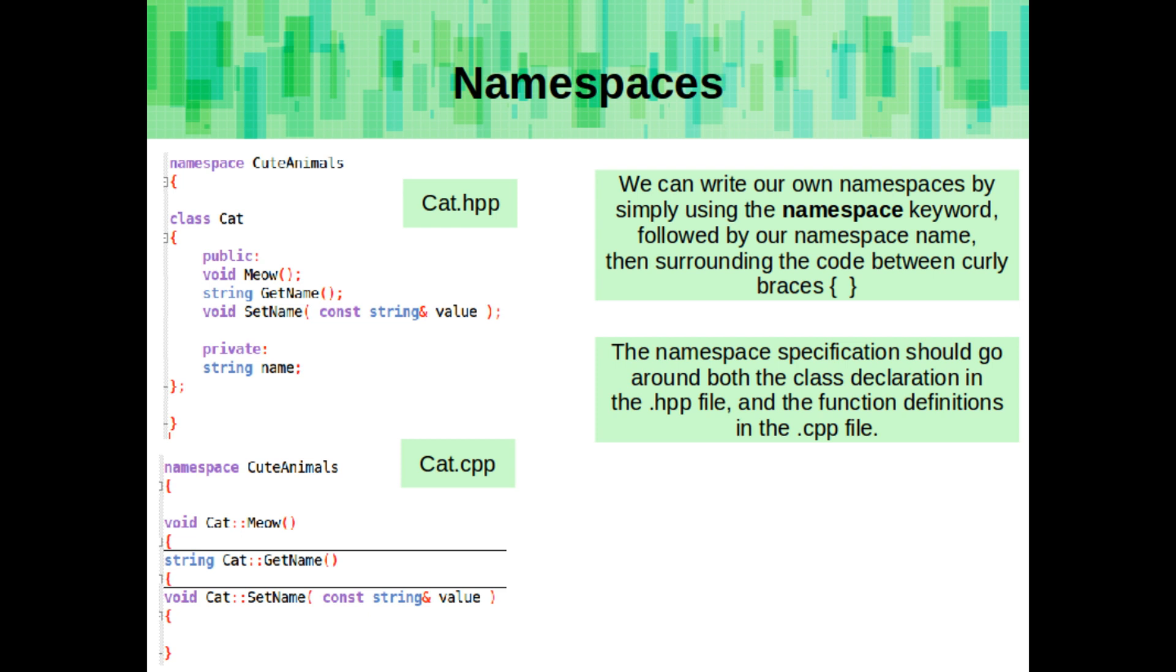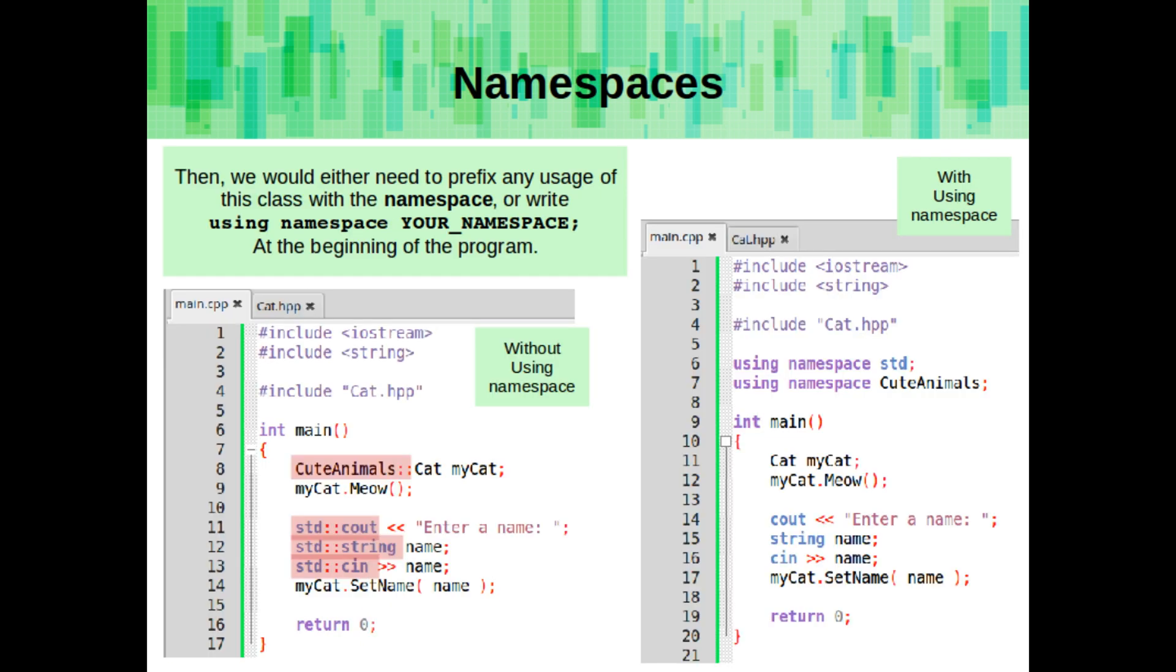Any code between the curly braces are in the namespace. Also, the namespace specification should go around both the class declaration in the .hpp file and the function definitions in the .cpp file. Then we would either need to prefix any usage of this class with the namespace's name, or write using namespace and then your namespace name at the beginning of the program, just like we do with using namespace std.